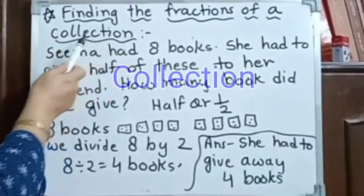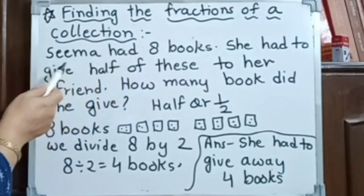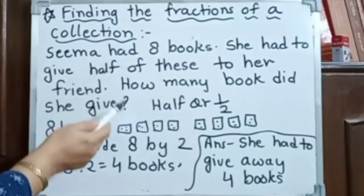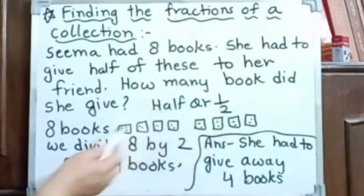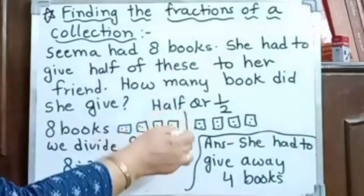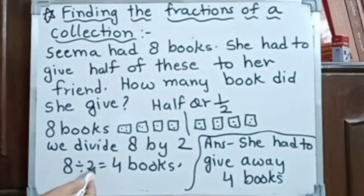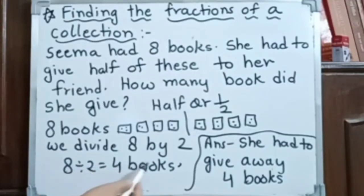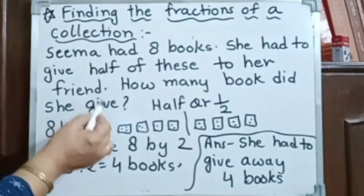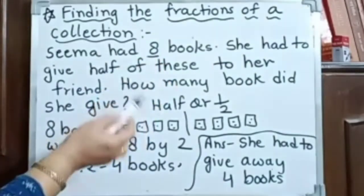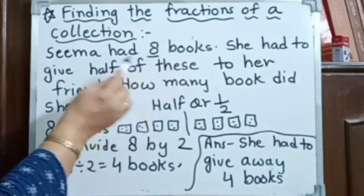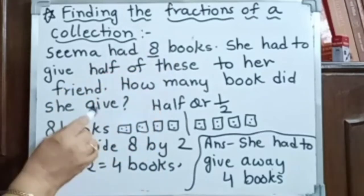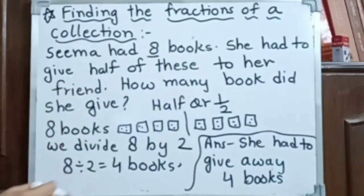Finding the fractions of a collection: Seema had 8 books. She had to give half of these to her friend. Half means 1 by 2. How many books did she give? We divide 8 by 2. Using the table of 2: 2 fours are 8, so she gives away 4 books. Whenever we have a number and we need to find a part of it, we divide. Half means 1 by 2, so 8 divided by 2 equals 4 books.